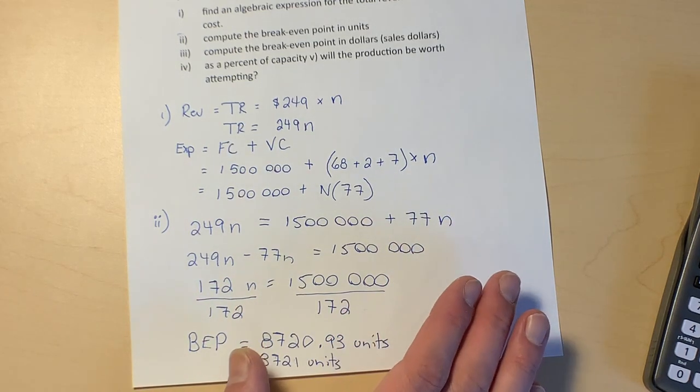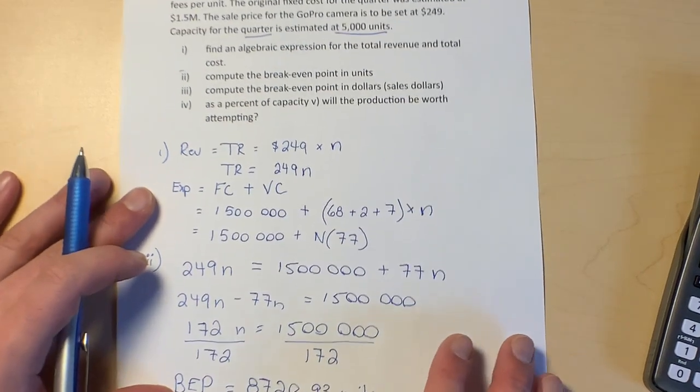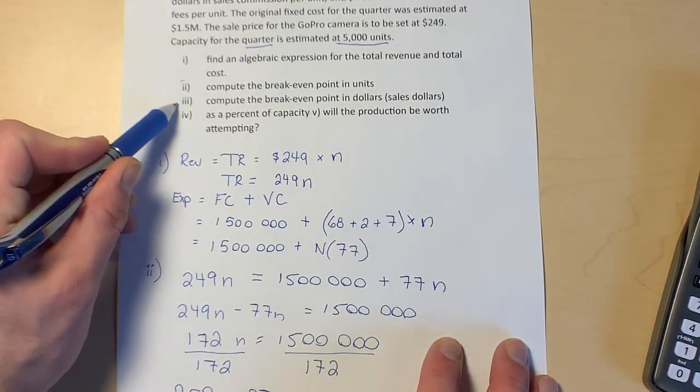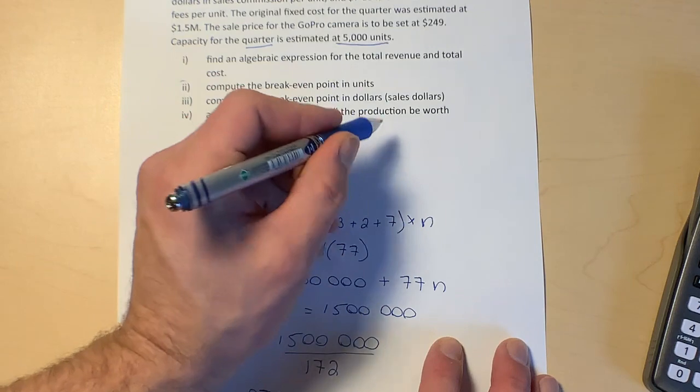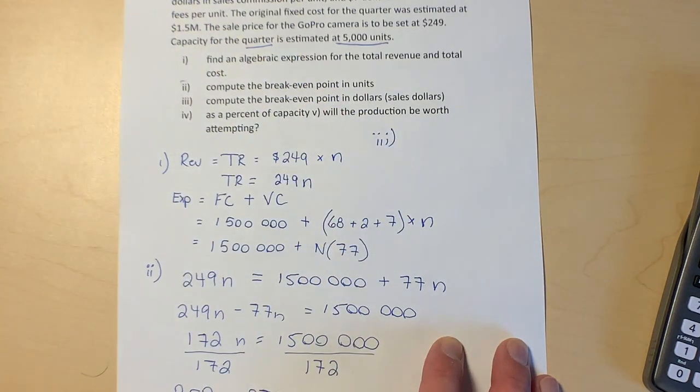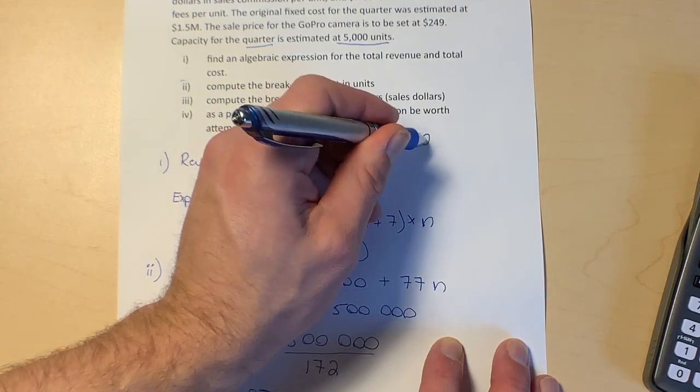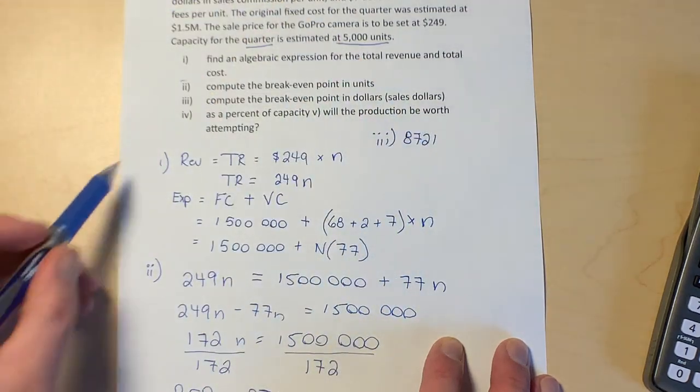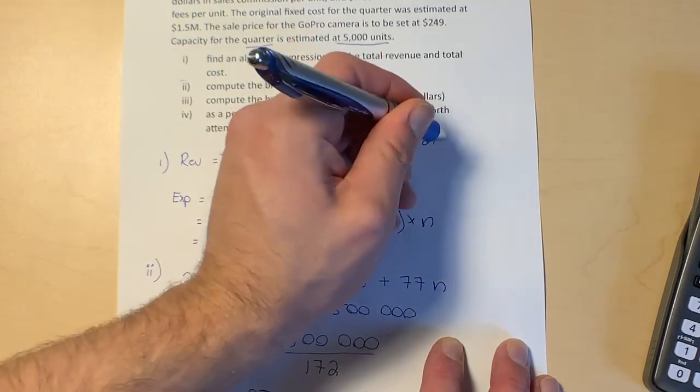The last couple of things are kind of easier. It says compute for part number three, compute the break-even point in dollars. Well, that's easy.